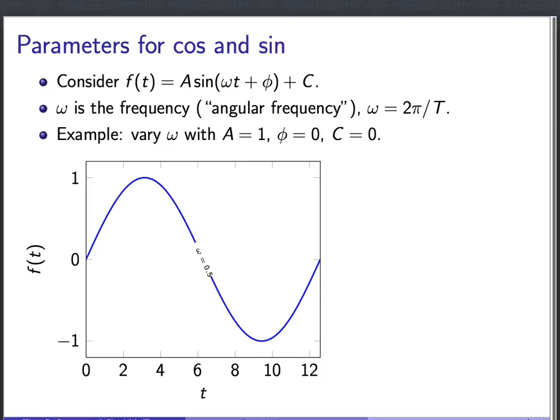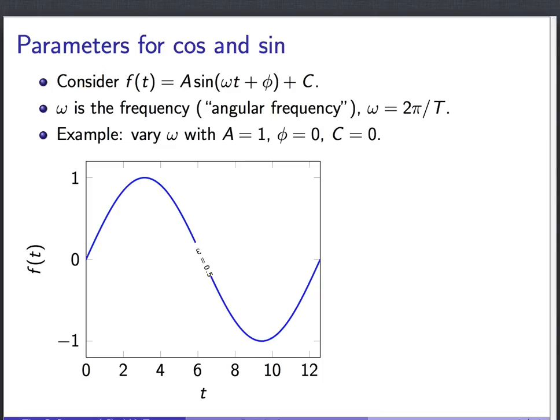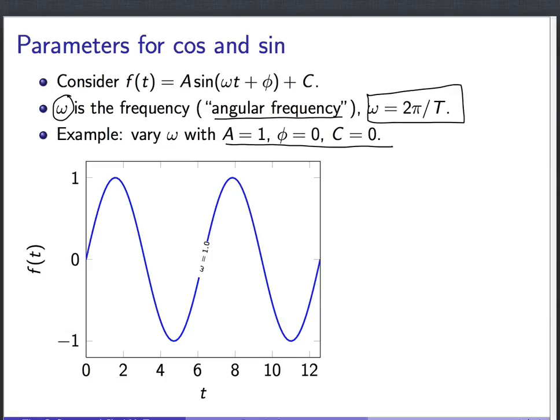And if I decrease ω, we see a slower wiggle. So we went from having two full repetitions of our pattern in this picture to one full repetition here. If I decrease ω even more down to 0.5, I only get half a repetition of the whole pattern.